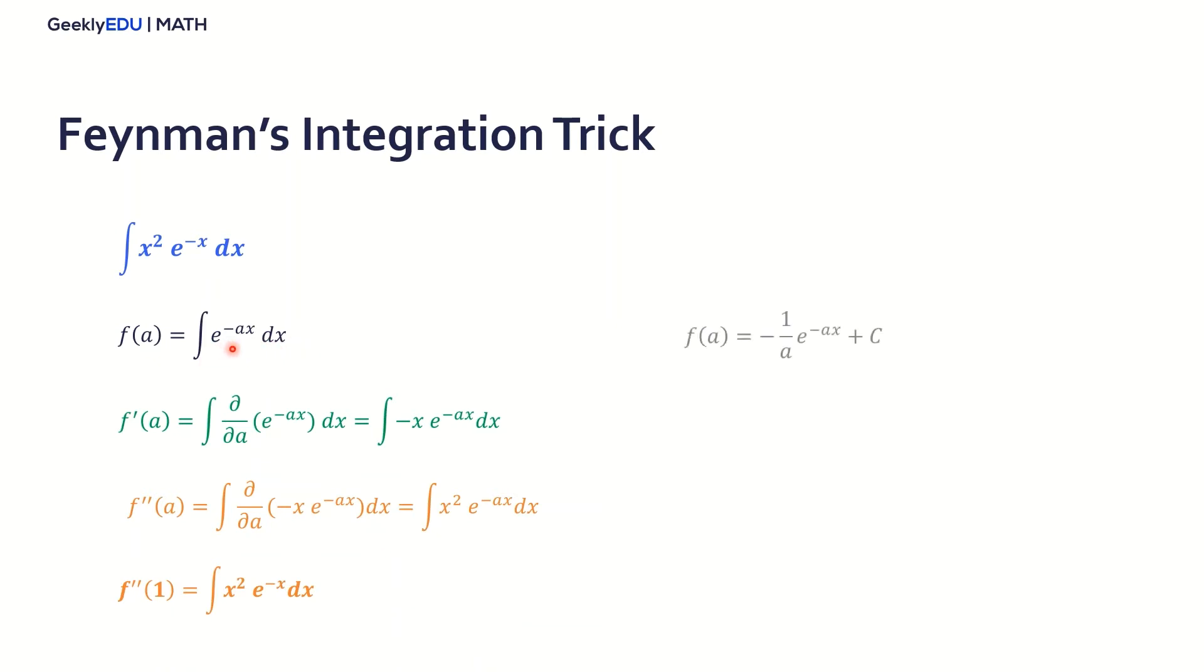So if we integrate now this function of a in terms of a, we'll get a simple result, which is negative 1 over a times e to the negative ax plus c. And now we can start from here.